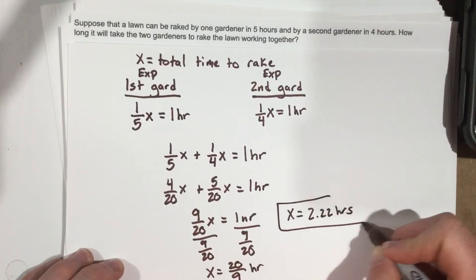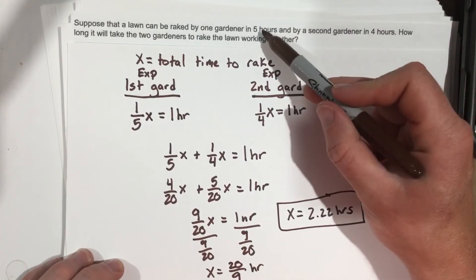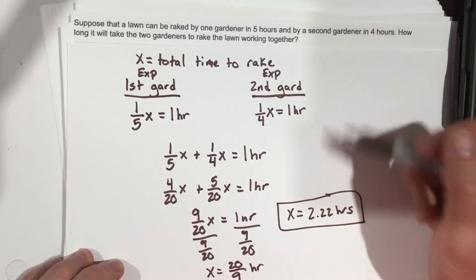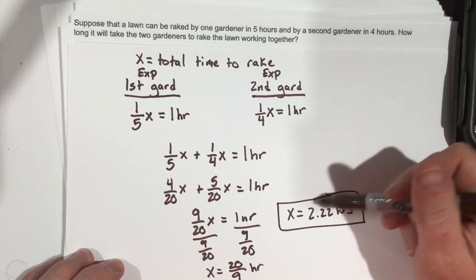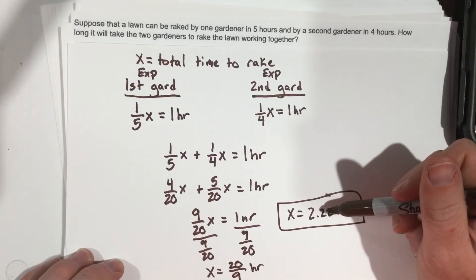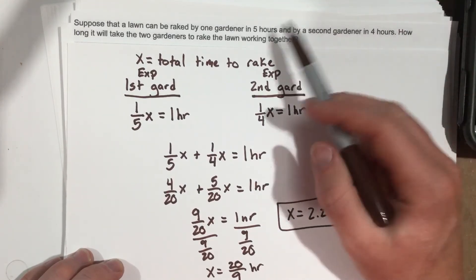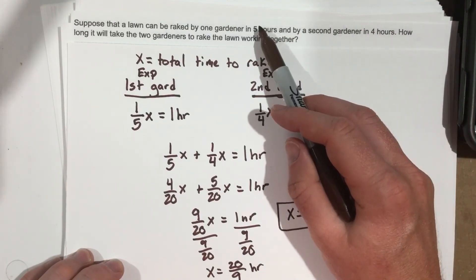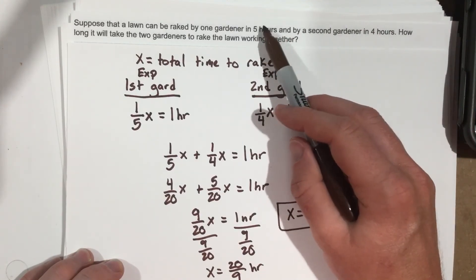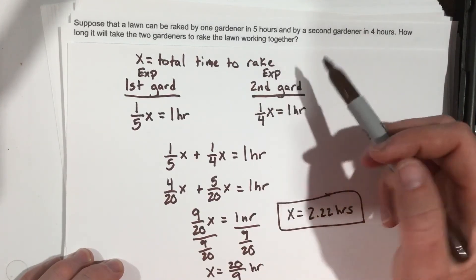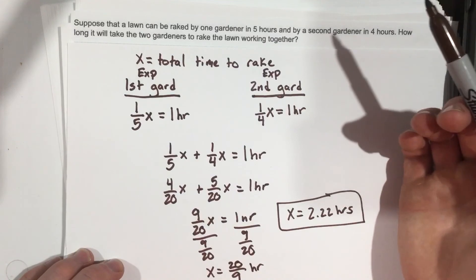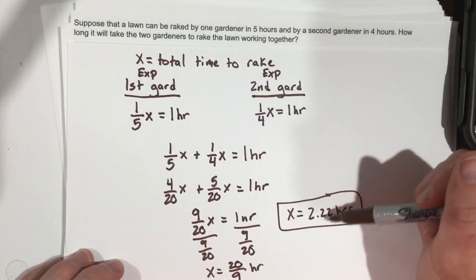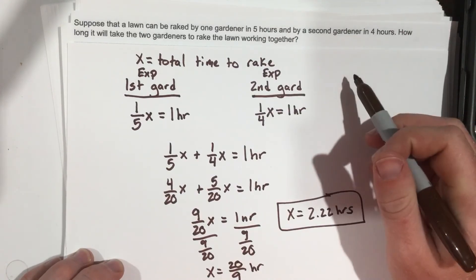So when they work together, the one person does it in five hours and the other in four, but together they do it in just over two hours. This should make sense because if they both worked at the same four-hour pace, they'd finish in exactly half the time — two hours. But since one is a little slower, the answer is just a bit higher than two.